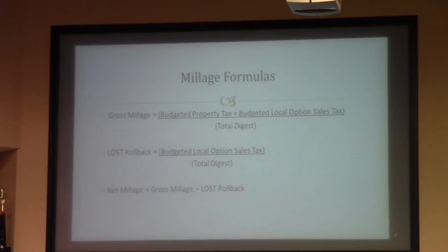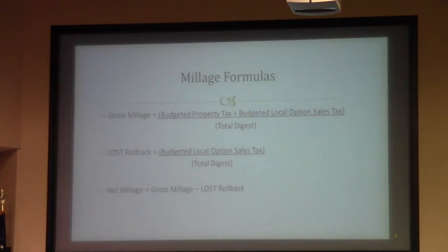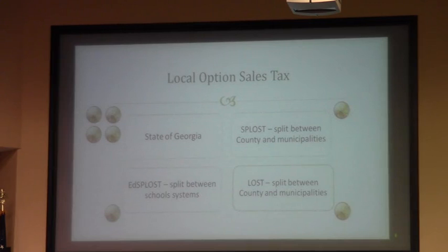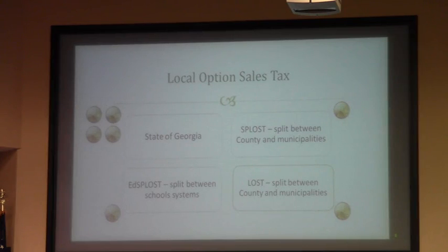The formulas used to calculate millage: your gross millage is your budgeted property tax plus your budgeted local option sales tax, divided by your total digest. To compute your LOST rollback, you take your budgeted local option sales tax and divide that by your total digest. The difference in those is the net millage rate. As a reminder on your sales tax, of the $0.07 that you paid, $0.04 goes to the state of Georgia, $0.01 is split between the county and municipalities for SPLOST which is for capital improvement, $0.01 goes to the school systems for capital improvement, and $0.01 goes to local option sales tax — split between the county and municipalities — and is used for property tax relief.